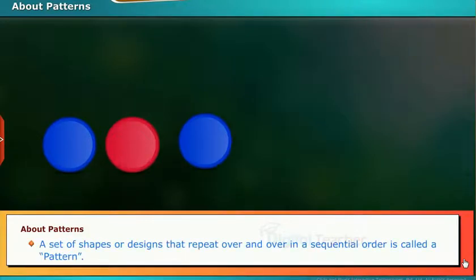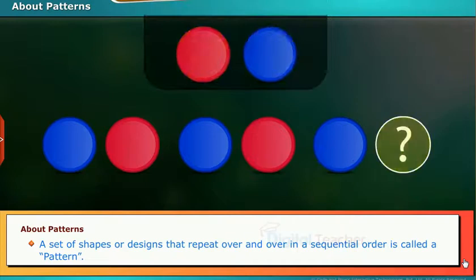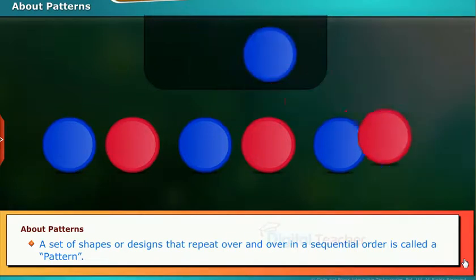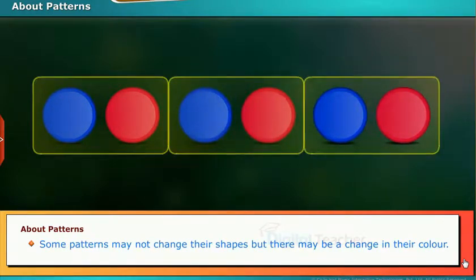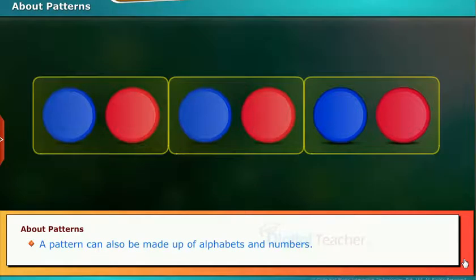Let us know about the patterns. A set of shapes or designs that repeat over and over in a sequential order is called a pattern. Some patterns may not change their shapes, but there may be a change in their color. A pattern can also be made up of alphabets and numbers.